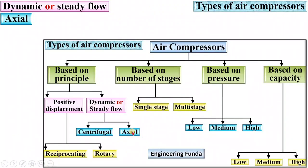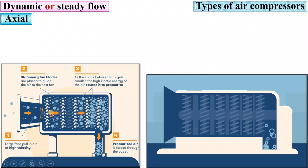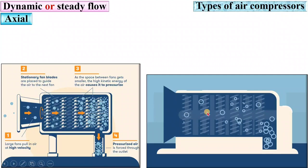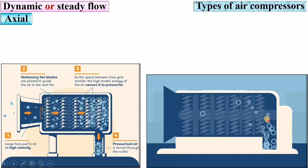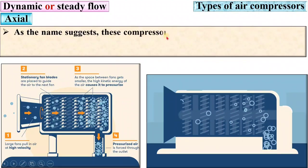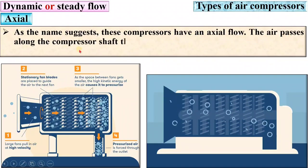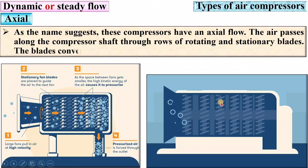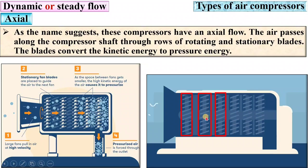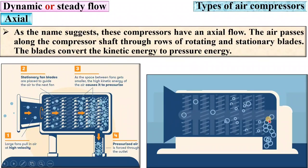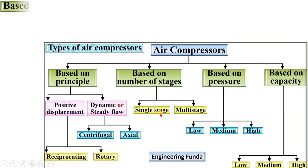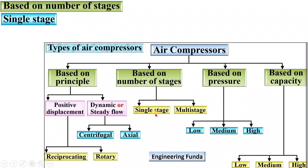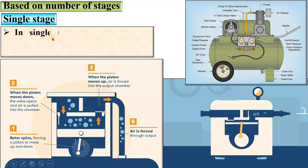Next, axial compressor. The flow is in the axial direction — that is why it is called an axial flow air compressor. The air flows along the axis of the compressor. As the name suggests, these compressors have an axial flow: the air passes along the compressor shaft through rows of rotating and stationary blades, and the blades convert kinetic energy into pressure energy.